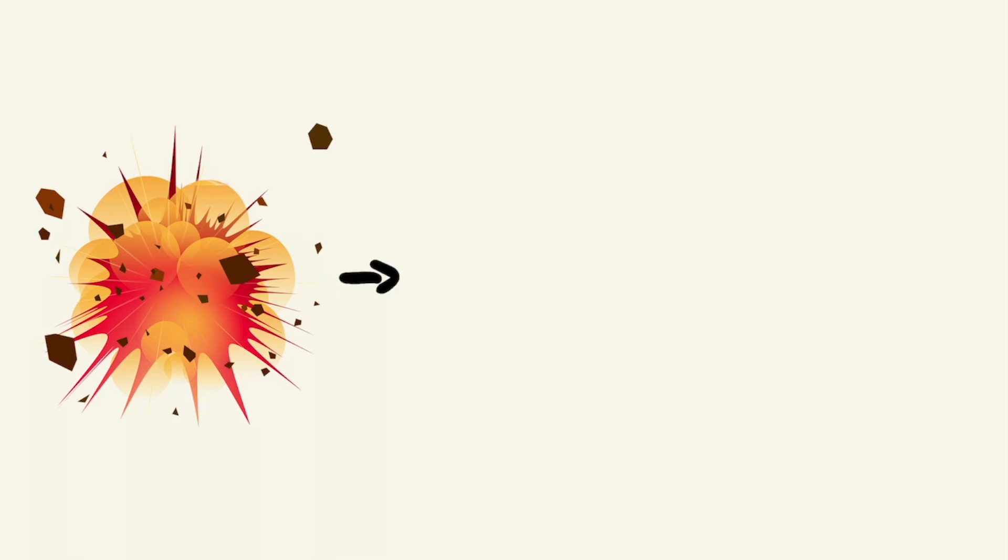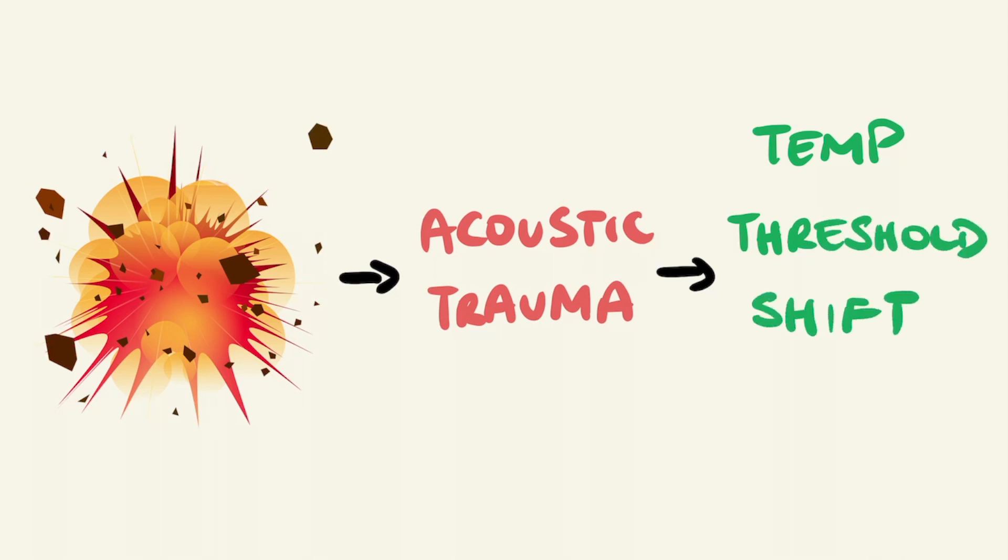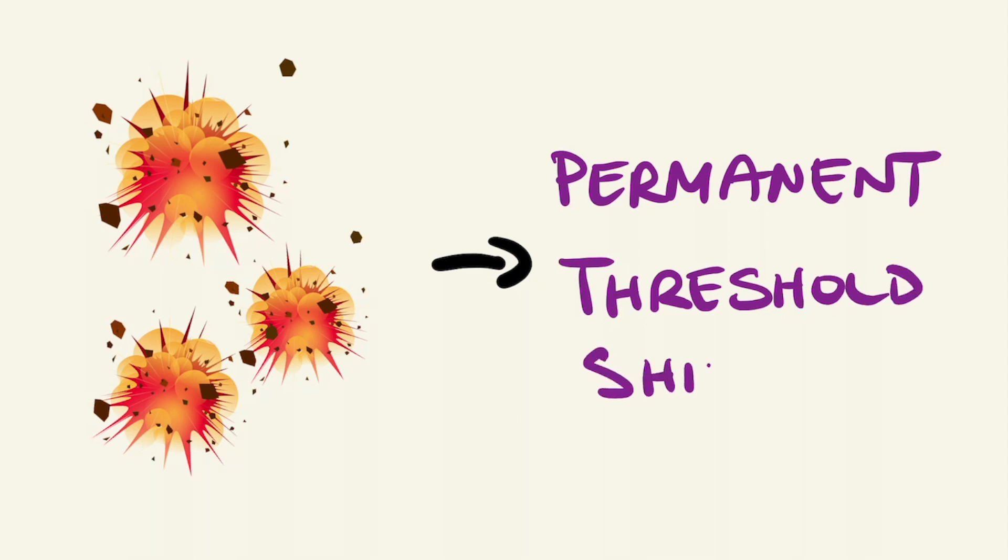Damage to the ear can occur either through a single exposure to an extremely loud noise event, such as an explosion. This is known as acoustic trauma and leads to acute hearing loss. Acoustic trauma results in a shift in a hearing threshold, known as the temporary threshold shift. This condition, with only a single event, can generally recover within 16 to 48 hours. However, with repeated exposure, this trauma can be cumulative, leading to permanent threshold shift. This results in permanent damage to the hair cells of the inner ear. The first frequencies to be lost are generally 4,000 to 6,000 hertz, which is the range required to understand the nuances of human speech.